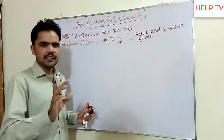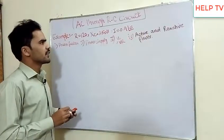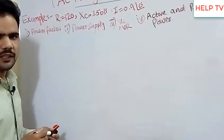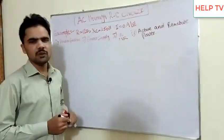We have basic given data. We have R given, X given, I given, and frequency given. Here we need to find the power factor, power supply voltage, VC, VR, and active and reactive power.